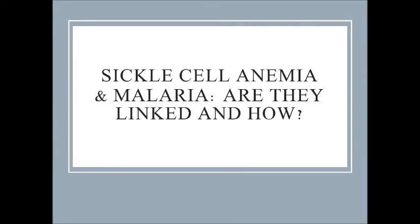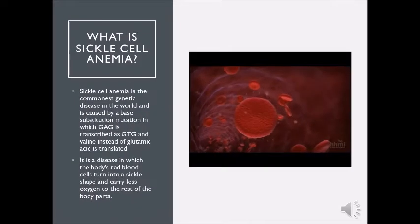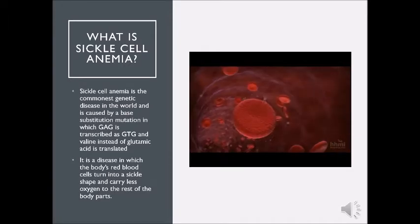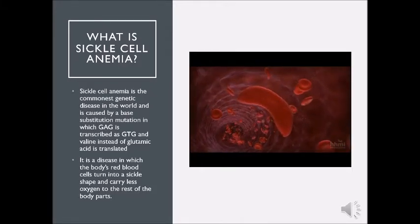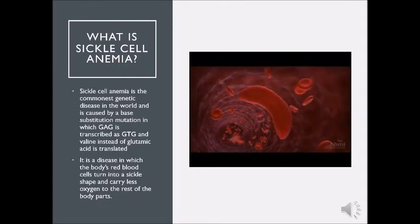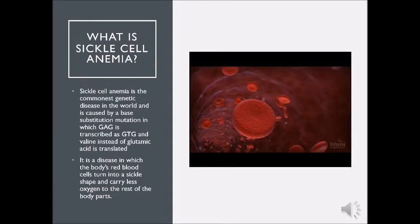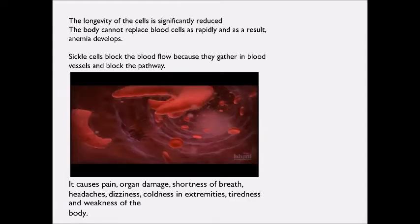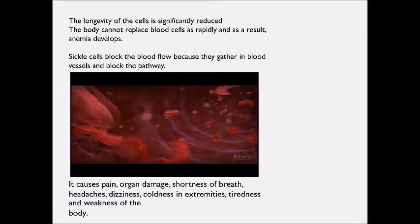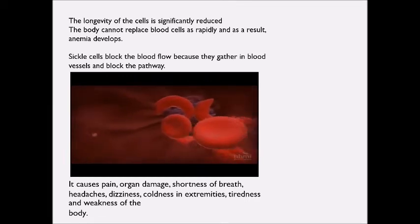What is sickle cell anemia? Sickle cell anemia is the commonest genetic disease in the world and is caused by a base substitution mutation in which GAG is transcribed as GTG, and valine instead of glutamic acid is translated. It is a disease in which the body's red blood cells turn into a sickle shape and carry less oxygen to the rest of the body. The longevity of the cells is significantly reduced, and the body cannot replace blood cells as rapidly, so anemia develops.